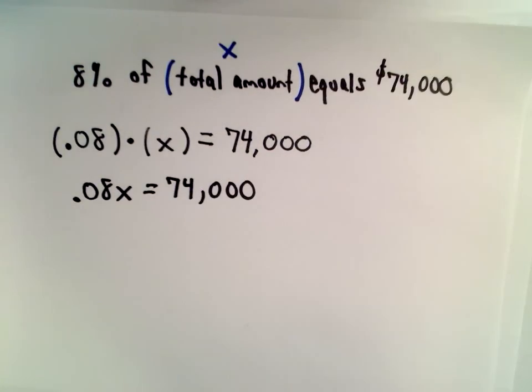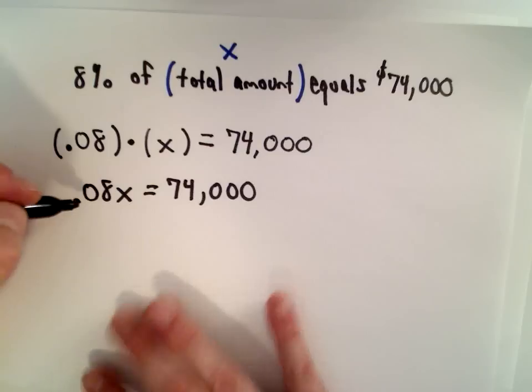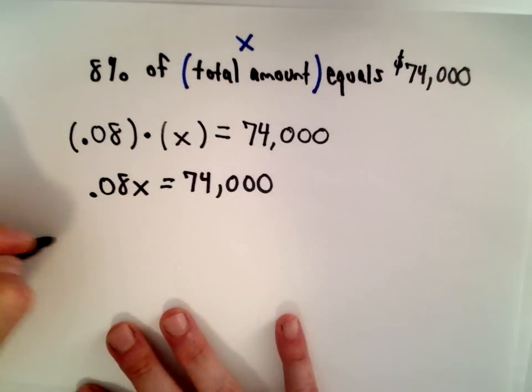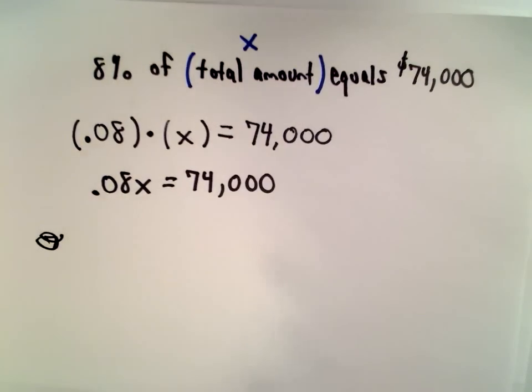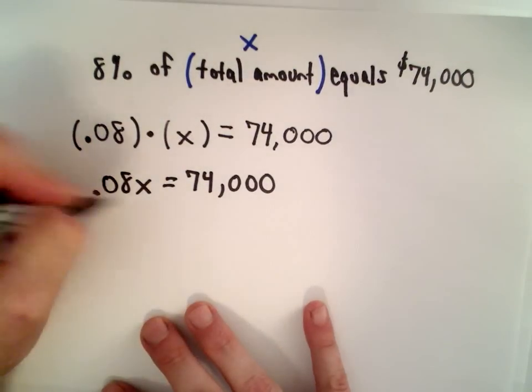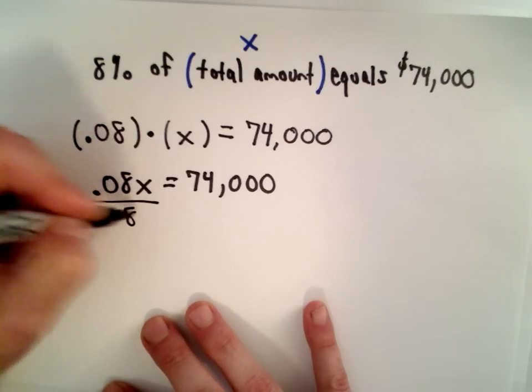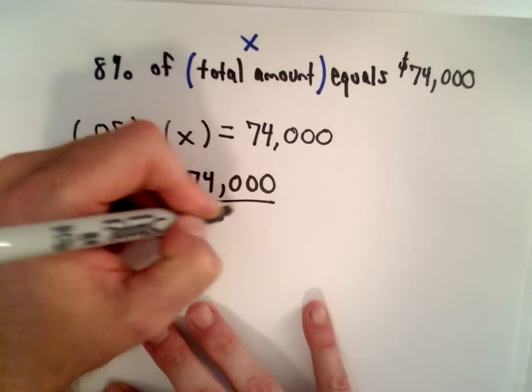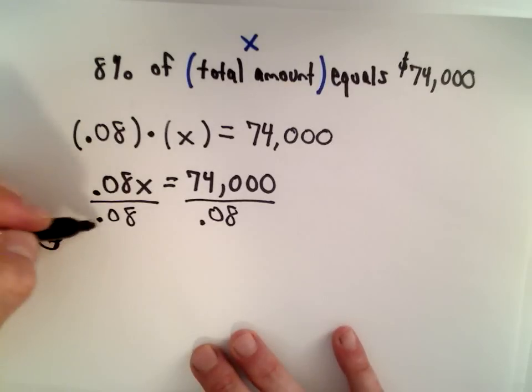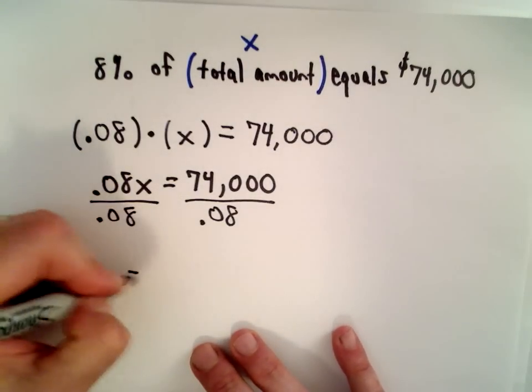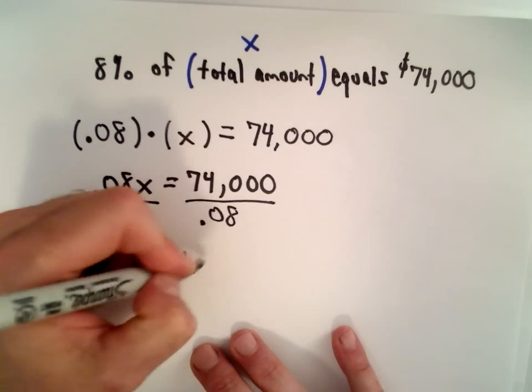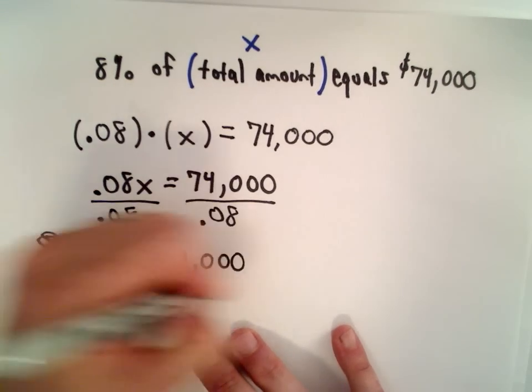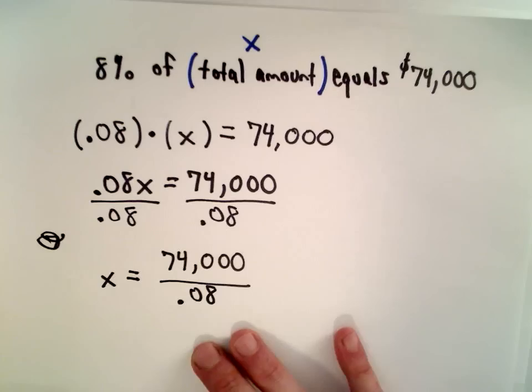And again, a couple different ways that we can go about doing this. So you could immediately say $74,000. We could, let's do it two ways. The first thing I'm going to do is just divide both sides by .08. .08 divided by .08 is going to leave us with x. And then we have $74,000 divided by .08.